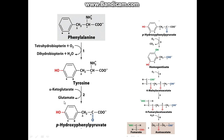Alpha-ketoglutarate goes to glutamate in the transferase reaction, so it loses the NH3 group and gains a keto group to form hydroxyphenylpyruvate — the pyruvate group is here, on the opposite side of the benzene ring, with the hydroxyphenyl group being the benzene ring with the OH attached. From there you get hydroxyphenylpyruvate.